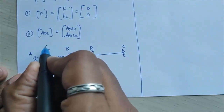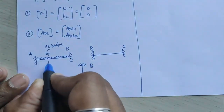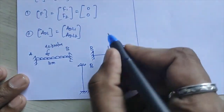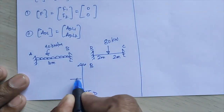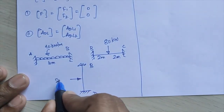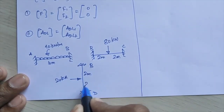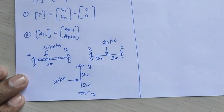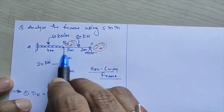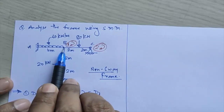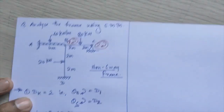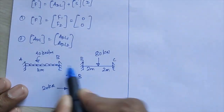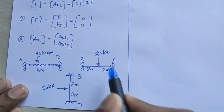The UDL of 40 kN/m is given on span AB which is 4 m. For span BC there is a point load of 80 kN at 2 m from each end. For member BD there is a point load at center. ADL1 at the first coordinate will be the summation of fixed end moments at joint B: MF_BA + MF_BC + MF_BD.